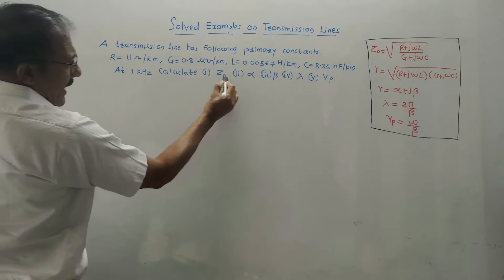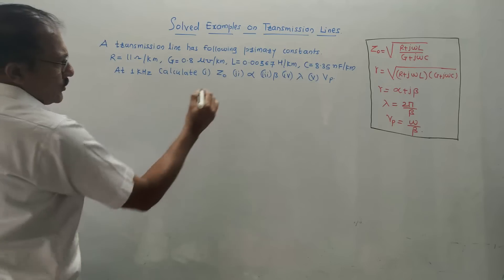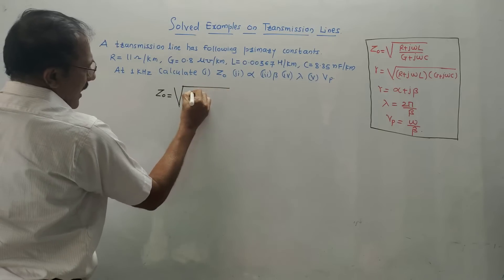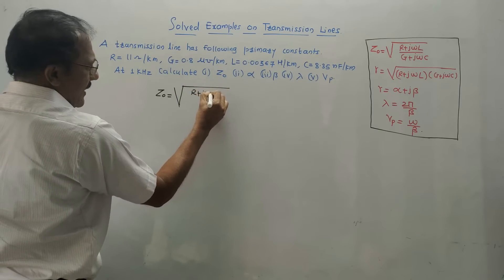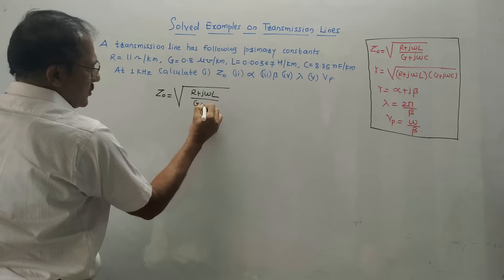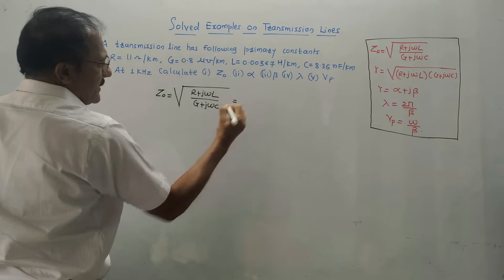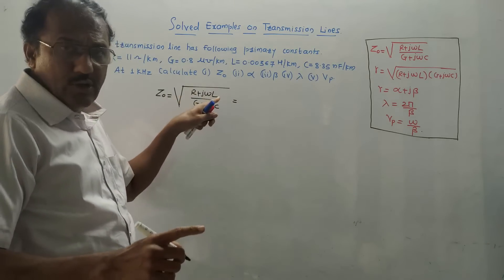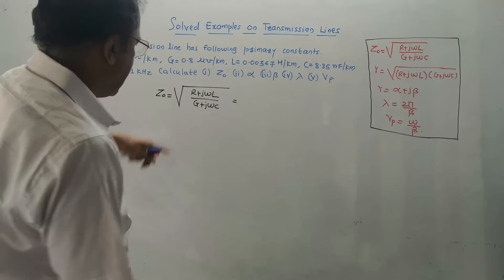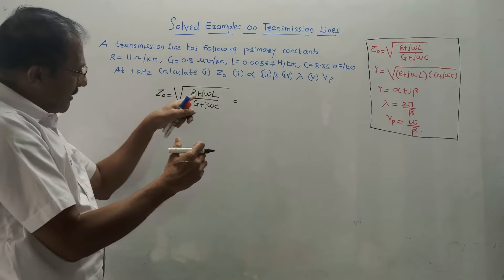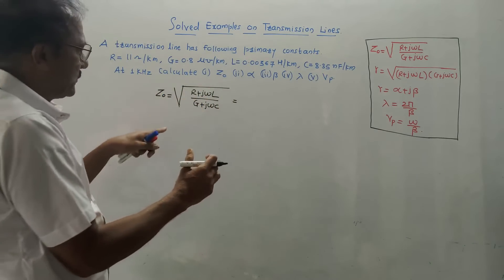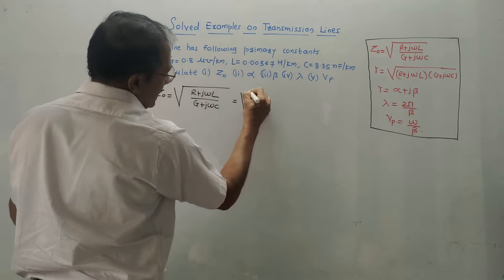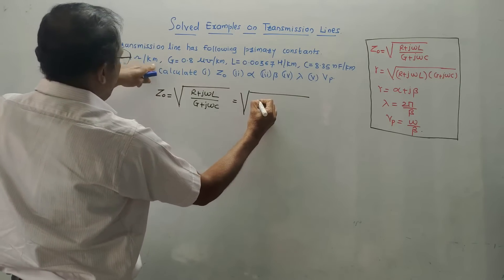The first part is to calculate the value of Z0, the characteristic impedance. The formula is Z0 = √[(R + jωL) / (G + jωC)]. Simply put the values in. Keep in mind, you cannot calculate the square root directly on the calculator when things are given in complex mode — we have to use different tricks. So I will put the values in. R is 11 ohms per kilometer.